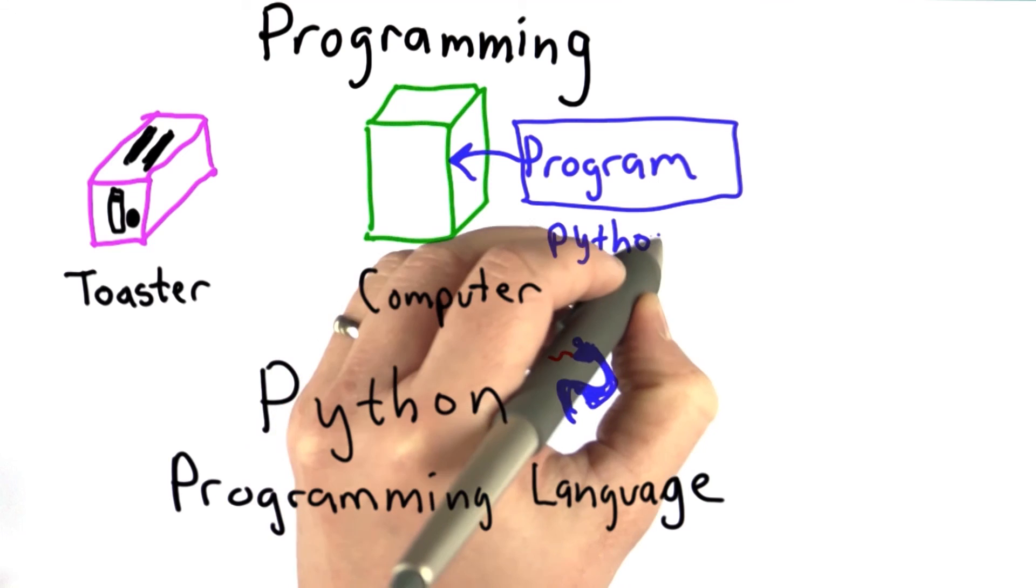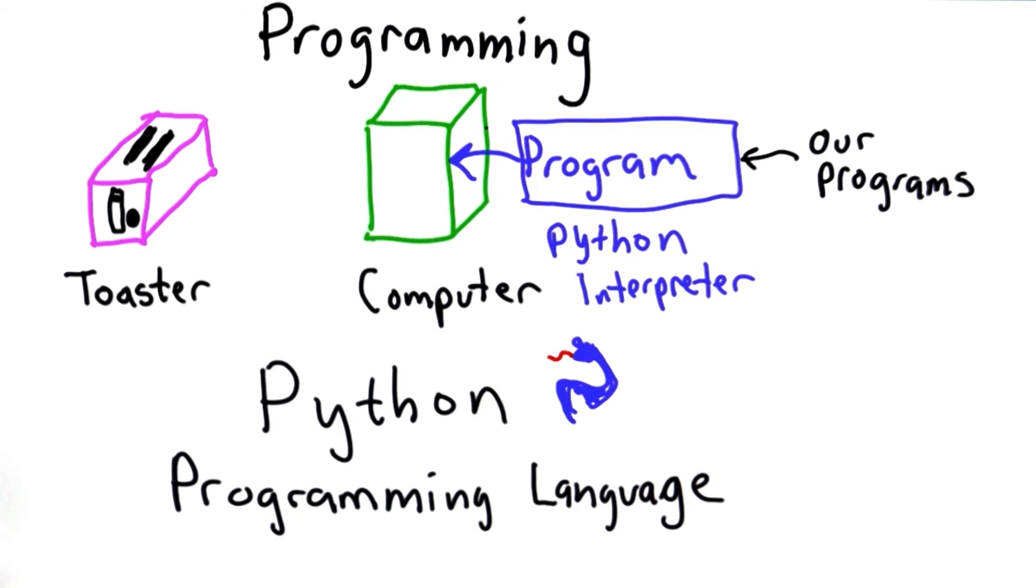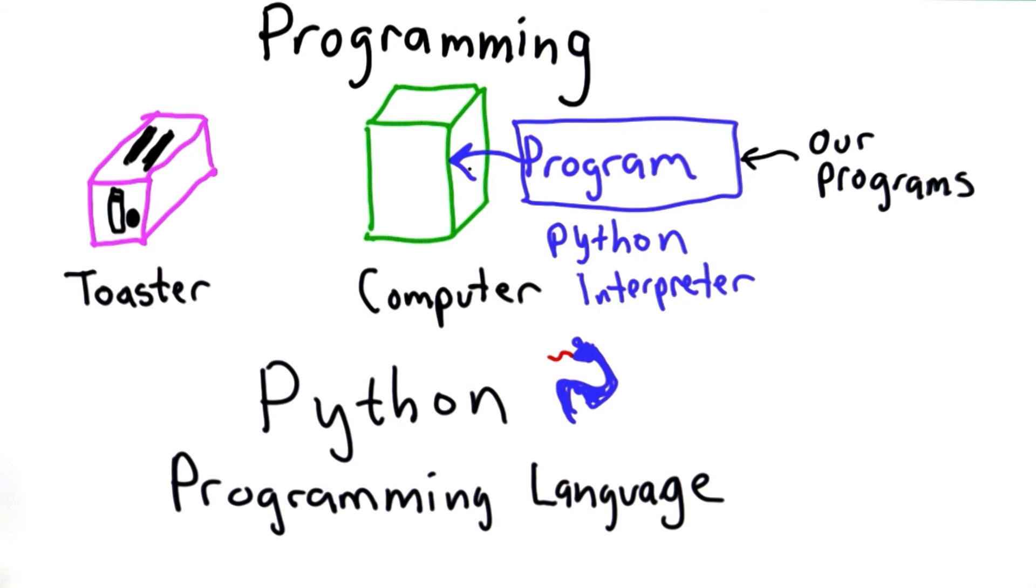Python is called an interpreter. It runs our programs, interprets them, and executes the program we wrote in the Python language by running a program in the language the computer can understand directly.